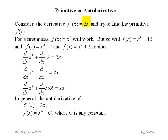Say the derivative is 2x and we want to find the primitive. We mentally work the chart backwards and make a guess. If I had x squared and took its derivative, it would be 2x. But x squared plus 12, x squared minus 4, or x squared plus 35.6 all also have derivative 2x. So I write the primitive as x squared plus c, where c is any constant.